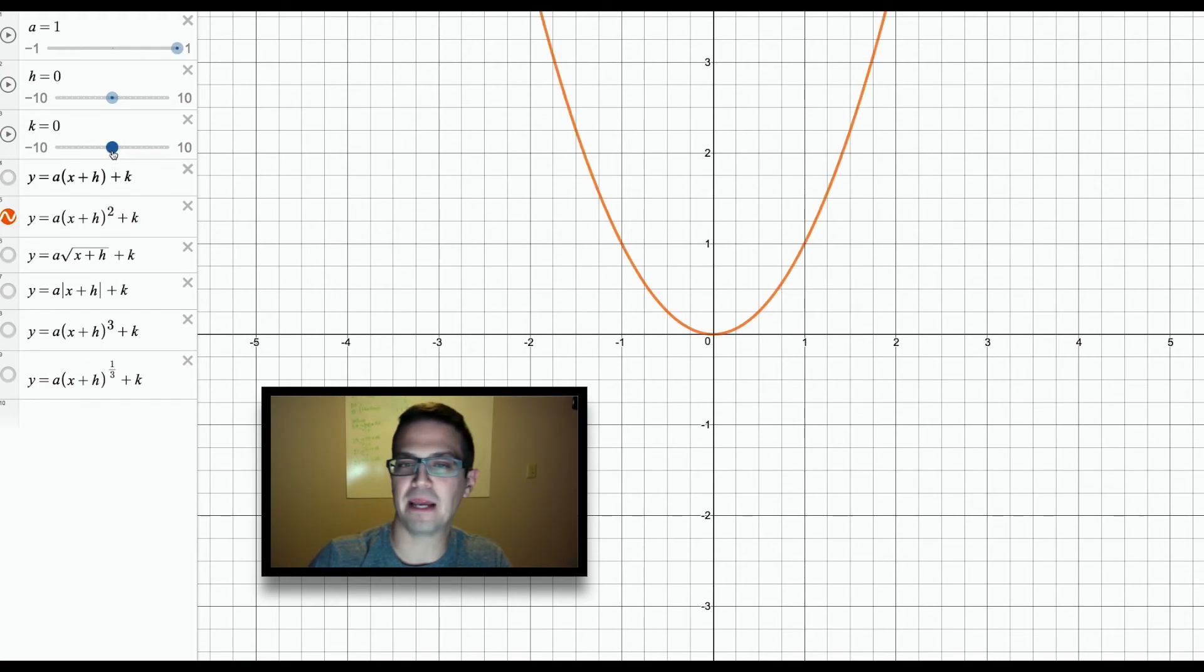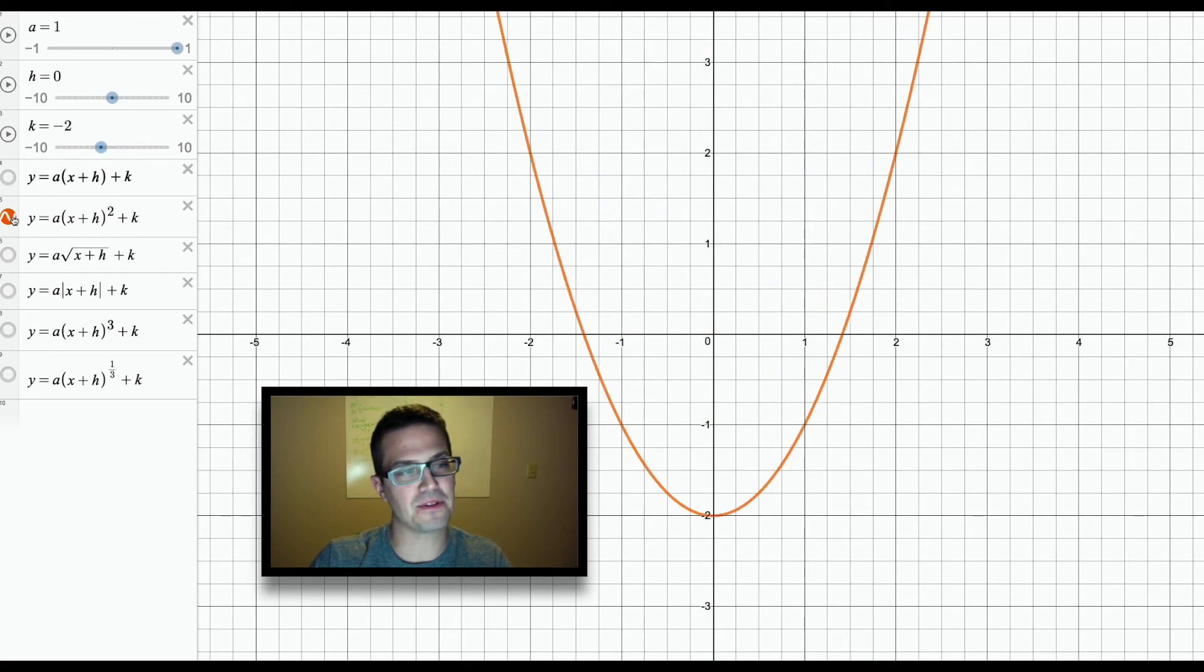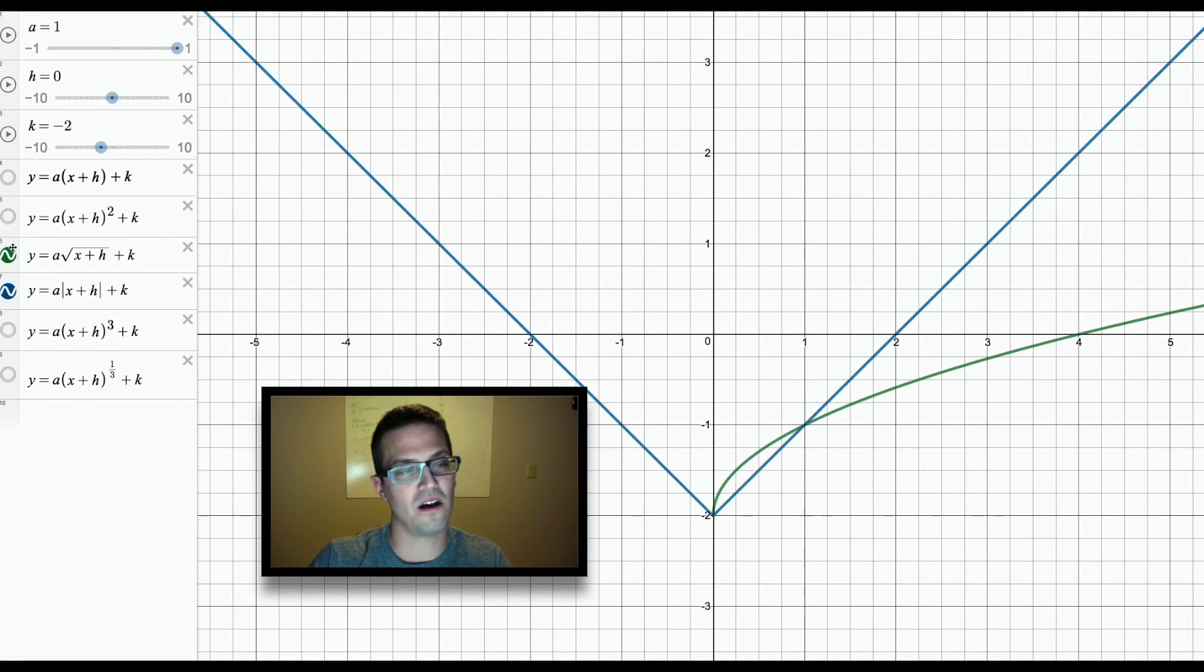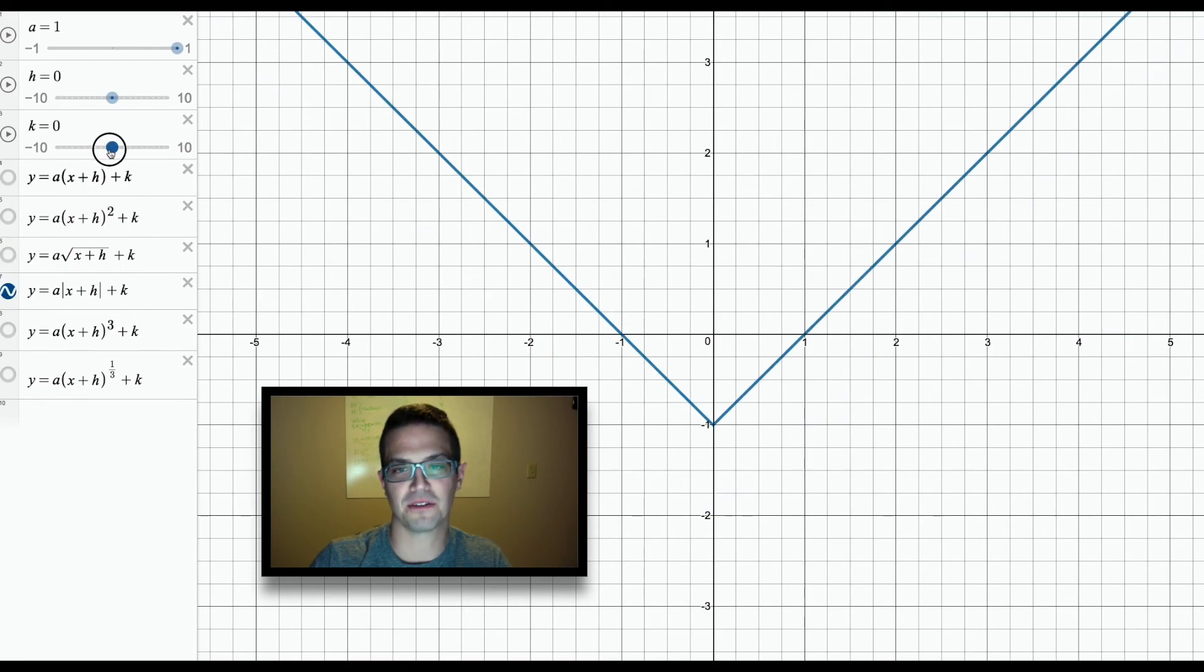And then this k right here, if k goes positive, so right now k is zero. So it's this plus k. If you go positive, it goes up, as you can see. And then if you go negative, it goes down. Again, this happens with every single one of the graphs. So as you can see, positive and negative, it goes up and down.